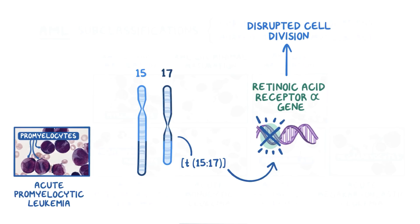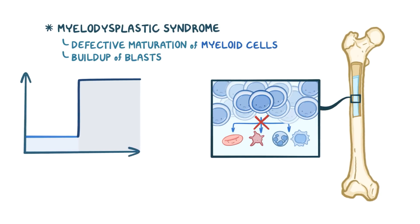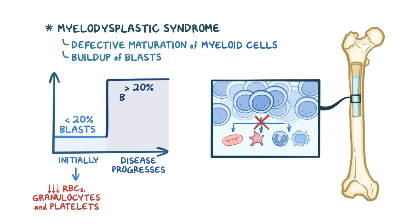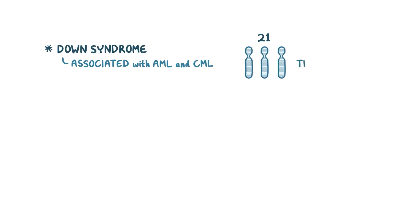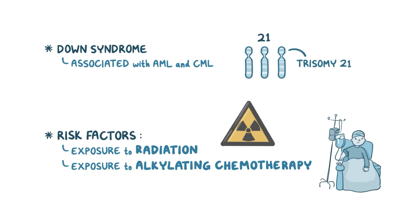There are certain conditions that can lead to AML, like myelodysplastic syndrome, which is characterized by defective maturation of myeloid cells and buildup of blasts in the bone marrow. Usually the buildup is initially less than 20% blasts, but that's enough to cause a decrease in the function of red blood cells, granulocytes, and platelets. As the disease progresses, the blast percentage may go over 20%, resulting in AML with a background of myelodysplasia. Another condition associated with both AML and CML is Down syndrome, caused by an extra 21st chromosome — trisomy 21. There are also other risk factors for acute leukemia, like exposure to radiation and alkylating chemotherapy, which may have been used as treatment for some other type of cancer.